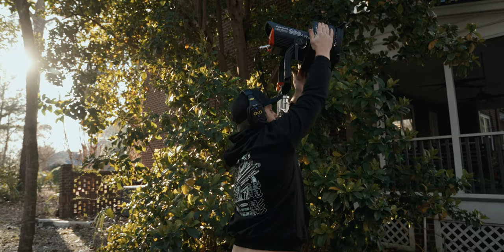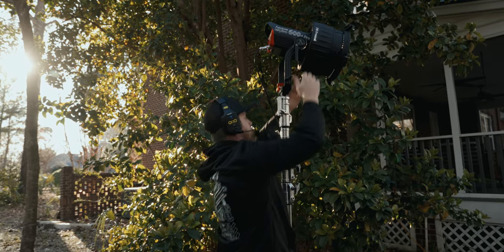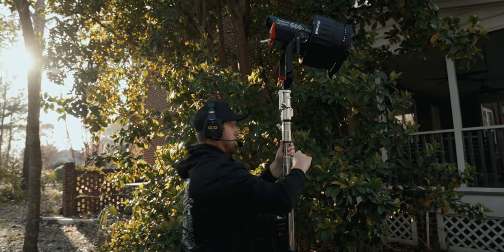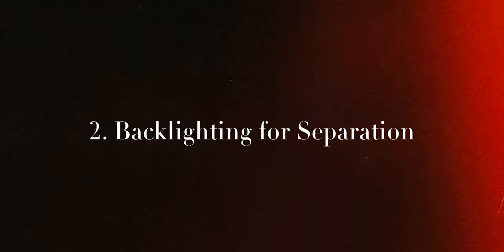If you're interested in signing up for Motion Array, use the link down in the description below. Speaking of links in the description, there is another link to a lighting breakdown for a recent project where I used the 600D Pro to basically mimic the sun and create some really nice backlighting for a couple of shots. And that'll give us the third reason why you should be using hard light — and that is for backlighting and adding separation.